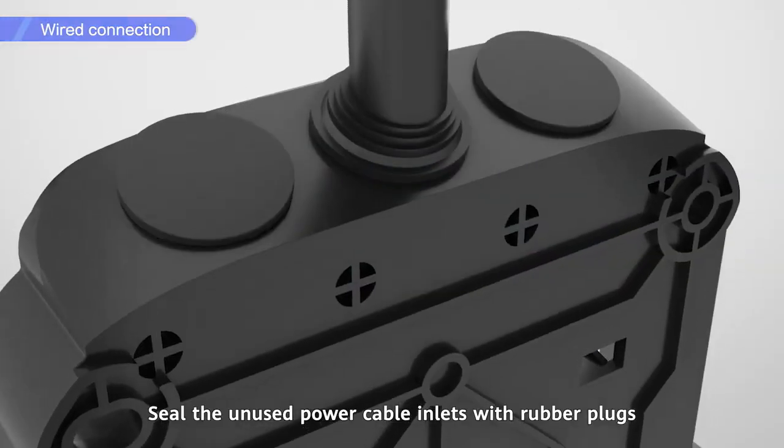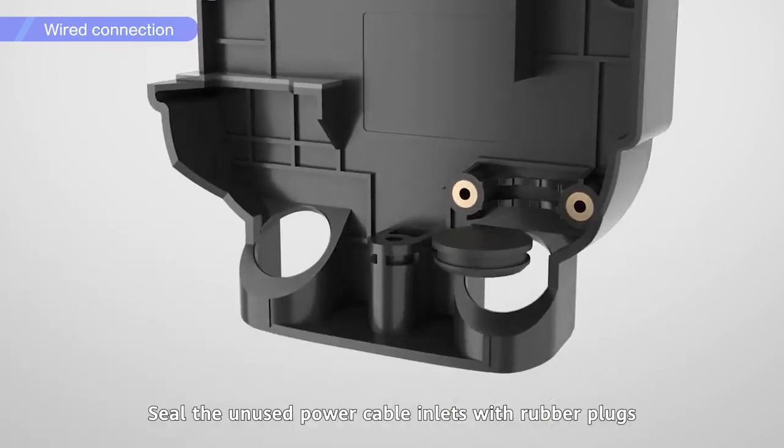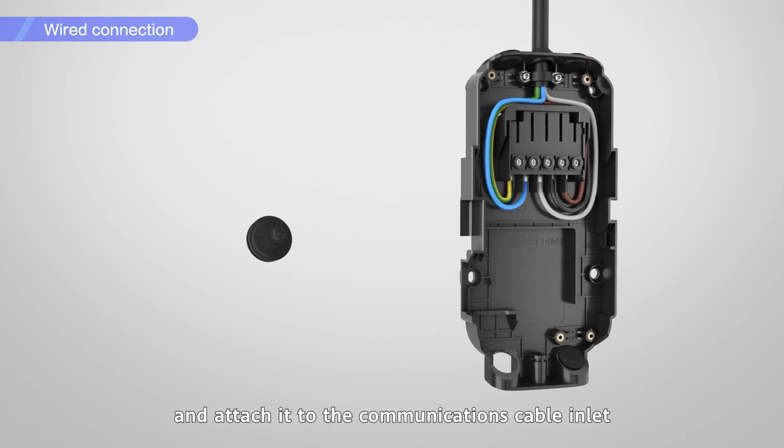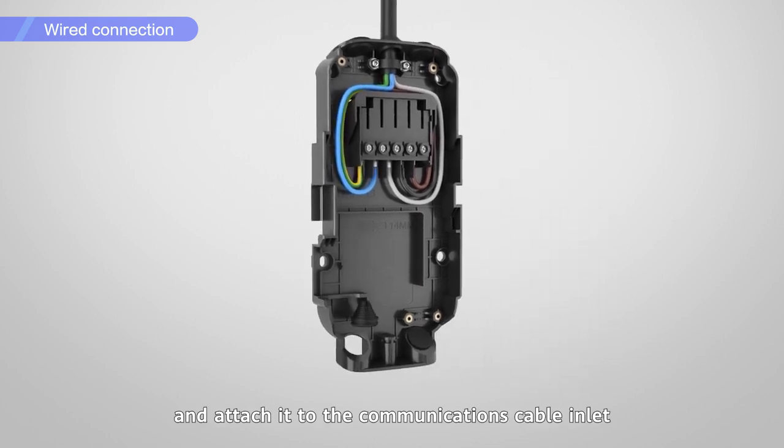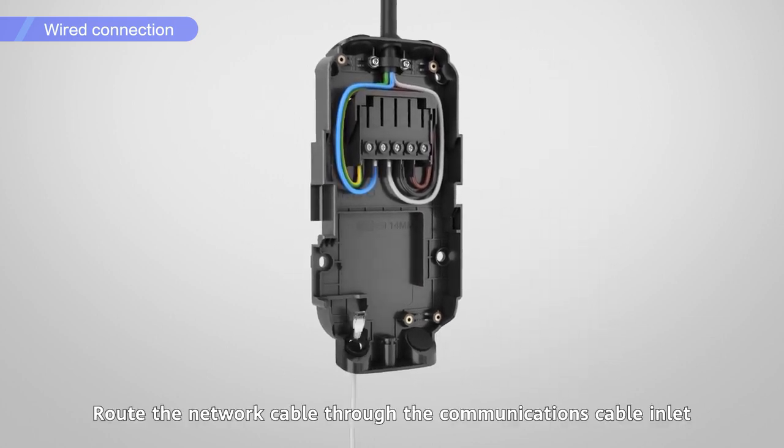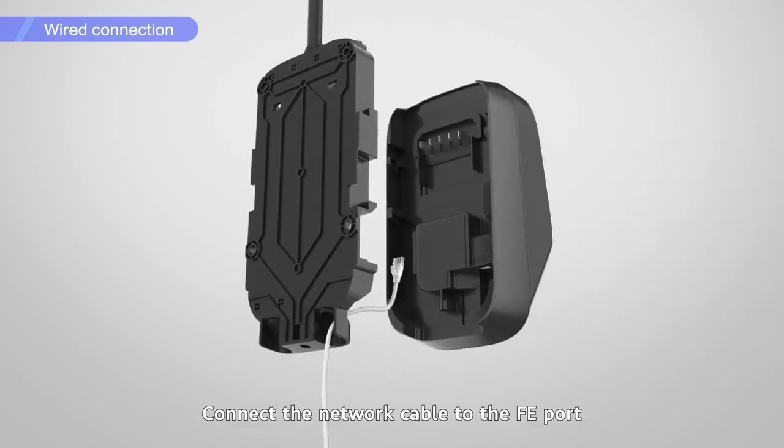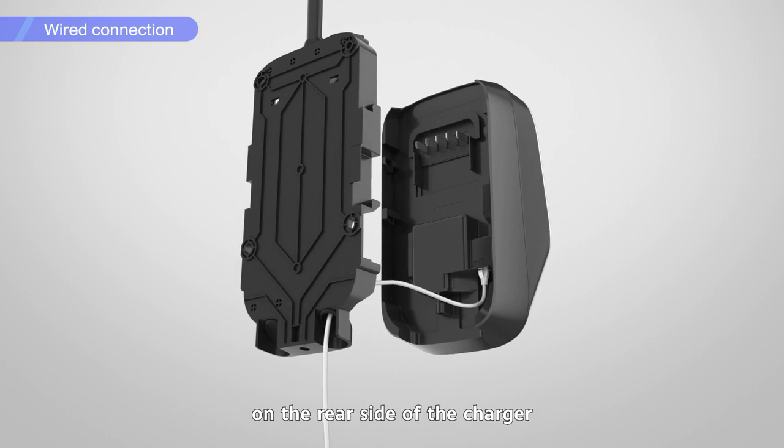Seal the unused power cable inlets with rubber plugs. Cut a cross on the cable rubber cover and attach it to the communications cable inlet. Route the network cable through the communications cable inlet. Connect the network cable to the FE port on the rear side of the charger.